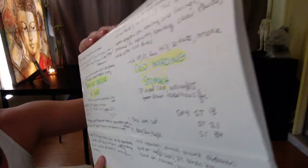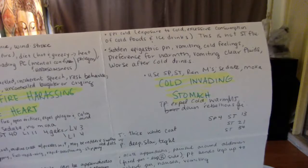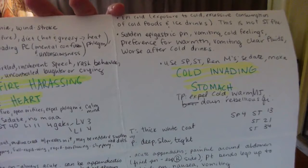I think this is the last one that we have. Cold invading the stomach: external pathogenic influence cold, EPI cold. Due to exposure to cold or excessive consumption of cold food and ice drinks. This is not the stomach flu. Characterized by sudden epigastric pain, vomiting, cold feelings, preference for warmth, vomiting clear fluids, worse after cold drinks.